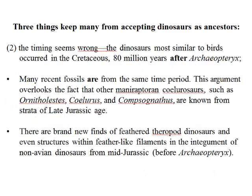Second concern: the timing seems wrong. The dinosaurs most similar to birds occurred in the Cretaceous, 80 million years after Archaeopteryx. But it turns out many fossils are from the same time period — Ornitholestes, Coelurus, Compsognathus, and others are known from the late Jurassic, getting pretty close. And there are brand new finds of feathered theropod dinosaurs, even feather-like filaments in the integument of non-avian dinosaurs from the mid-Jurassic, before Archaeopteryx. So this second concern has been addressed.